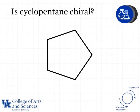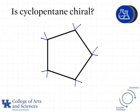Is cyclopentane chiral? First we add in our hydrogens, and we see that every carbon has two hydrogens attached regardless of what other groups are connected to that carbon. None of these carbons can be considered chiral because they do not have four unique groups — two of their groups are hydrogen. So cyclopentane is achiral.